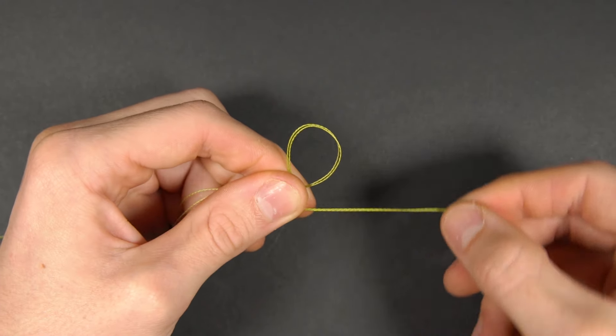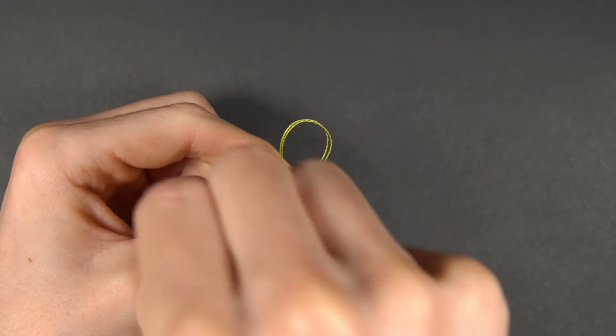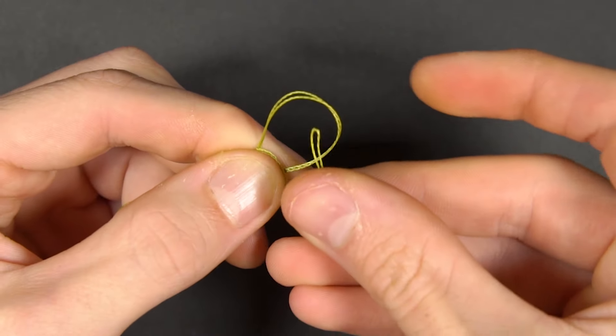You'll now need to wrap the loop around the back of itself before then passing the end through the first loop.